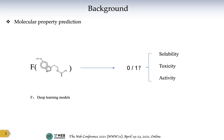Firstly, I want to briefly introduce what is molecular property prediction. Here is a molecule. What we want to do is to design a deep learning model to predict if this molecule has some specific properties like solubility, toxicity, or activity. So it is a binary classification problem.